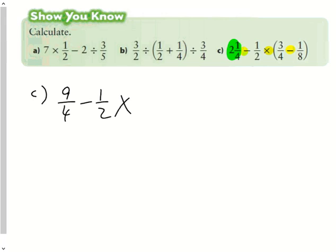multiplied by whatever the difference is between 3 quarters and 1 eighth. I can do the work over here, common denominator of 8. That'll be 6 eighths, take away 1 eighth, which is 5 eighths. So the brackets, or 3 quarters, take away 1 eighth works out to be 5 eighths.